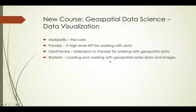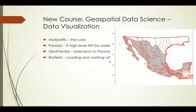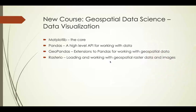We'll also look at RasterIO, which allows you to load and work with geospatial raster data and images. RasterIO also allows you to create contour lines from raster data. For example, this is a raster containing rainfall data, so we're looking at contours of precipitation — and there are a lot of other things we can do with RasterIO, as we'll see.